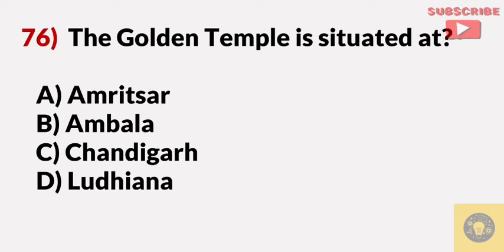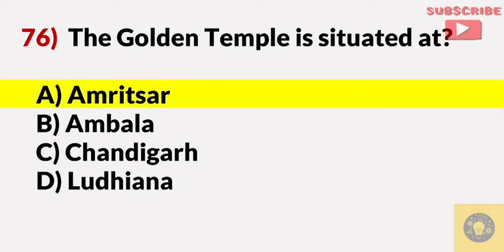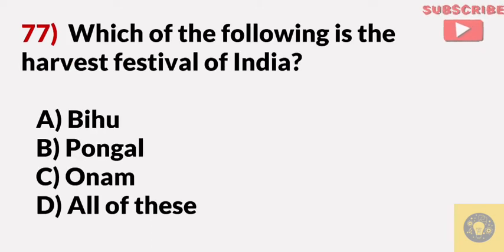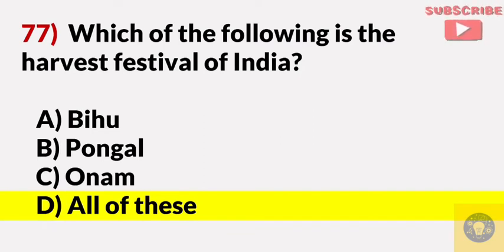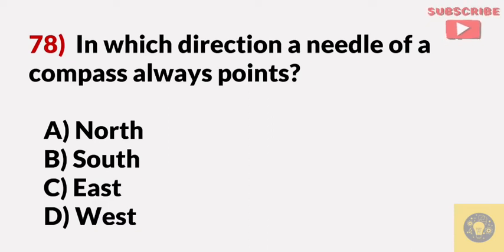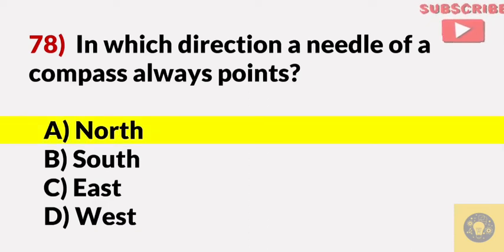The Golden Temple is situated at? Answer A, Amritsar. Which of the following is the harvest festival of India? Answer D, all of these — Bihu, Pongal, and Onam. In which direction does the needle of a compass always point? Answer A, north.